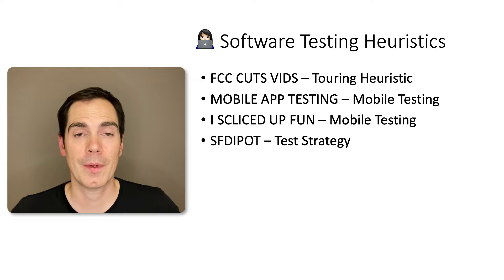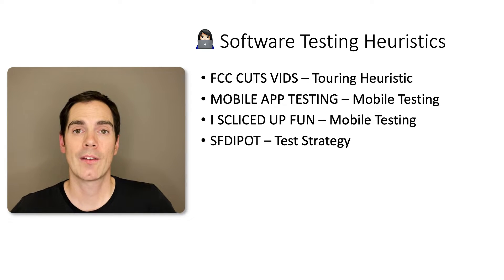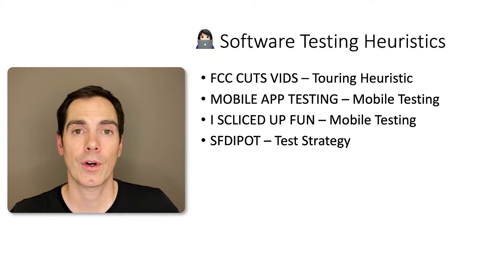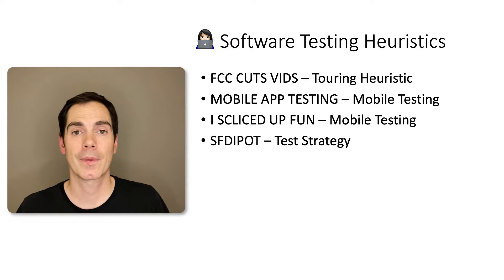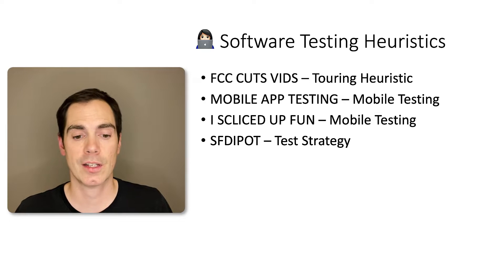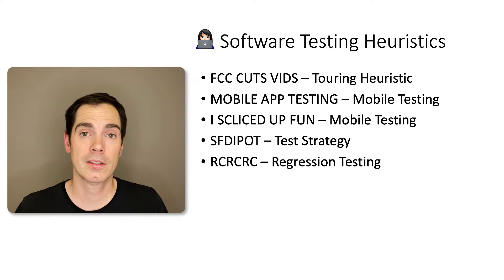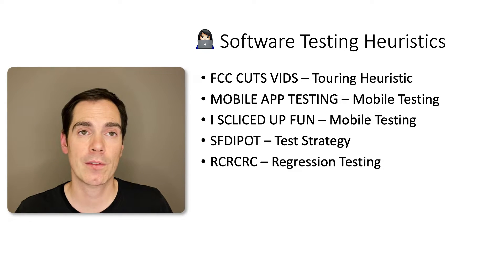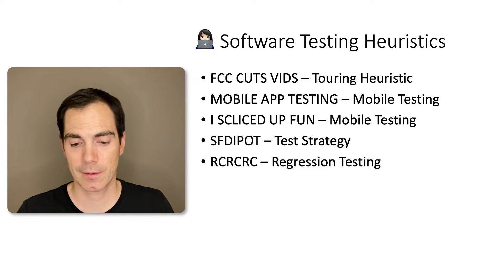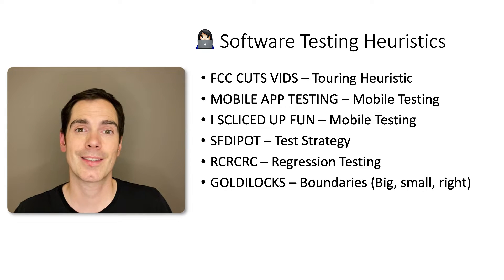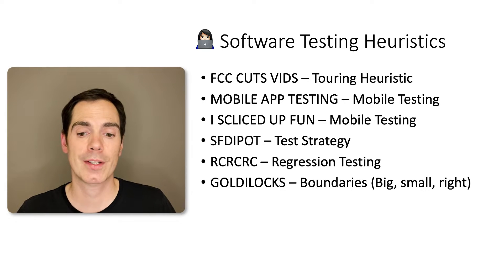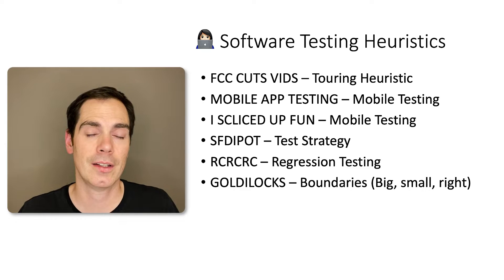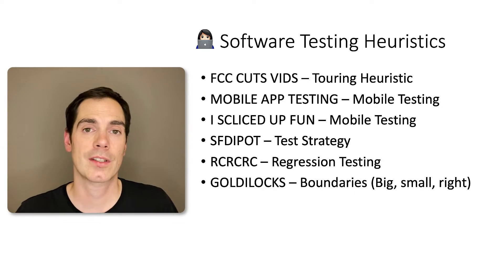SFDIPOT can be used for test strategies. Whenever you come to a new product or company and don't know where to start, this mnemonic is a great starting point — it guides you through the questions you should answer to create a valid and solid test strategy. RCRCRC is for regression testing; it helps you generate testing ideas. Goldilocks is about boundaries — entering big numbers, small numbers, or exactly the right numbers that fit within defined limits.